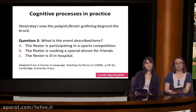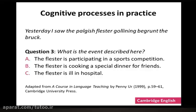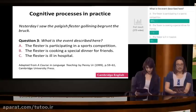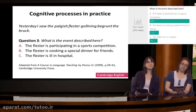Now let's take a look at one final question, that's question three about the same sentence. The question is: what is the event described here? Is it A, the flester is participating in a sports competition; B, the flester is cooking a special dinner for friends; or C, the flester is ill in hospital? What we're finding is that 80% went for A, 11% chose B, and 8% chose C. Even though there's quite a strong majority, it's not as strong as with the previous questions.